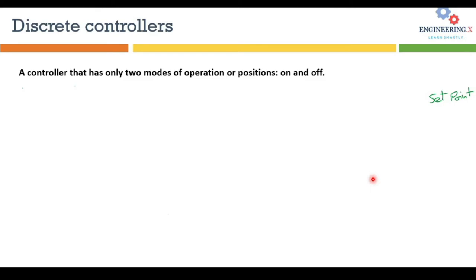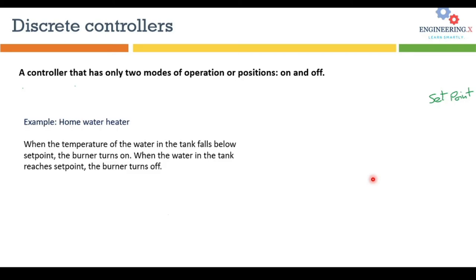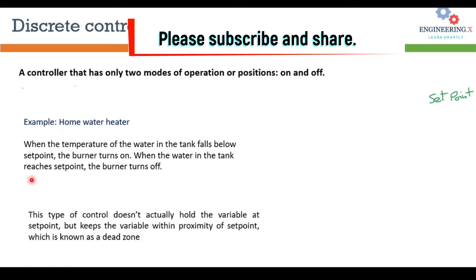The first type is discrete controllers. As the name suggests, this kind of controller has only two modes of operation: either on or off — there is no intermediate position for control. A day-to-day example is a hot water heater. When the water tank temperature falls below the set point, the burner turns on, and when it reaches the set point, the burner turns off.